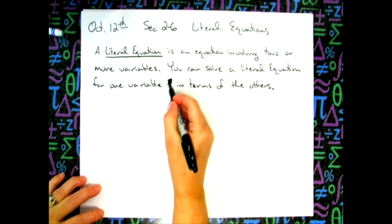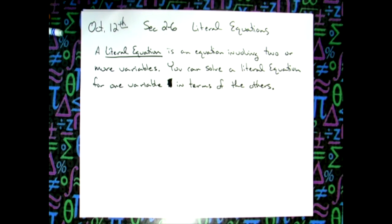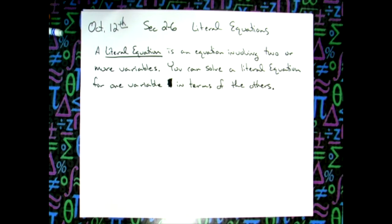A literal equation is an equation — we already know what equations are, they have equal signs — that involves two or more variables. There could be some numbers, and obviously addition, subtraction, multiplication, and division. What we're going to do is solve a literal equation for one of the variables — pick one variable, get it by itself on one side, and move everything else to the other side.